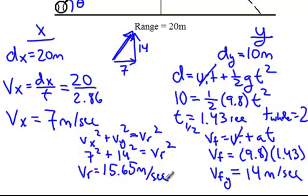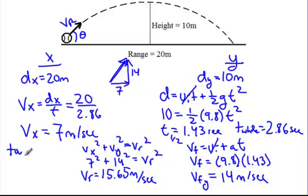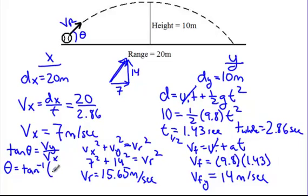Now, if I want to find my angle, I'm going to use the tangent of theta. Tangent of theta always equals vy over vx. When I do that, to find my angle I take the inverse tangent — or arctangent — of 14 over 7, and I end up finding the angle to be 63.4 degrees.